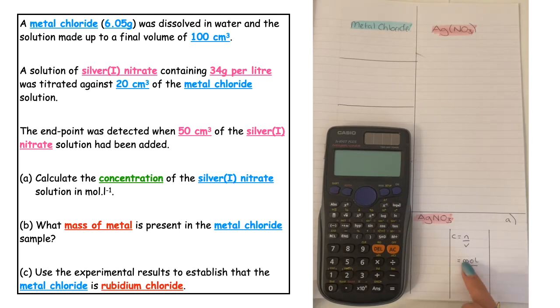We already know the volume. The question says 34 grams per litre, so we've already got the value here - it's going to be in one litre. We need to make sure that we've got the number of moles to do that.